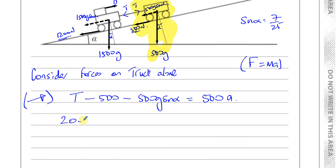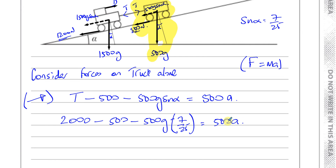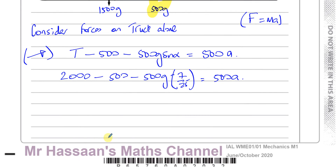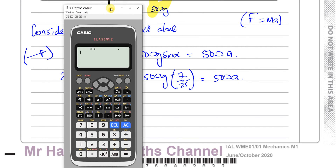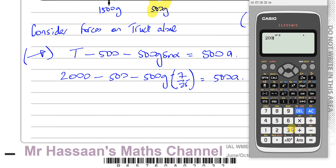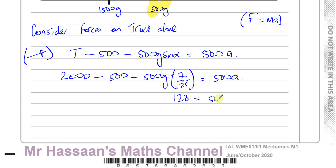So: T minus 500 minus 500 × G × sine alpha equals 500 × A. That is 2,000 minus 500 minus 500 × 9.8 × (7/25) equals 500A. Calculating: 2,000 minus 500 minus 500 × 9.8 × 7/25 gives 128. So 128 equals 500A.